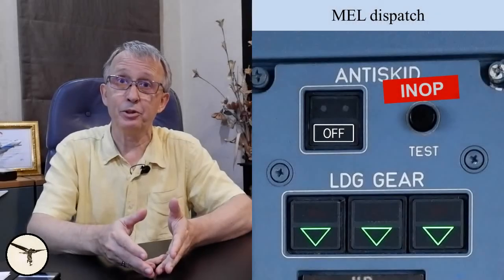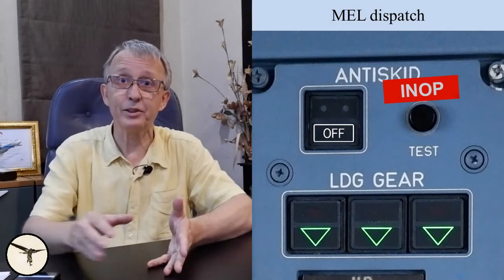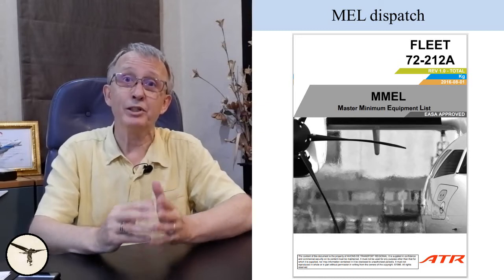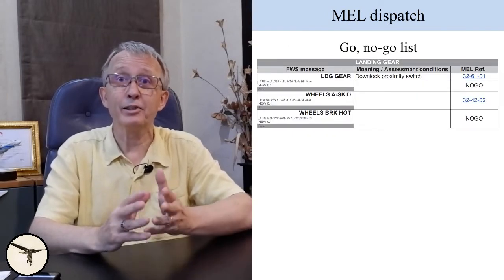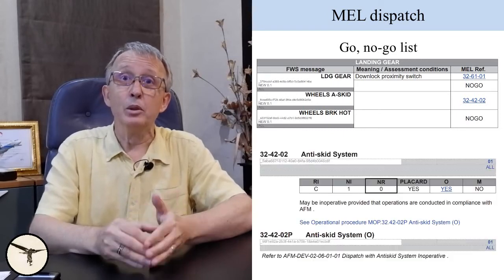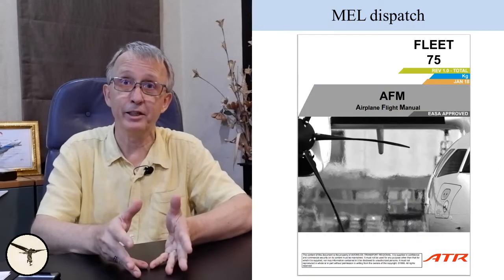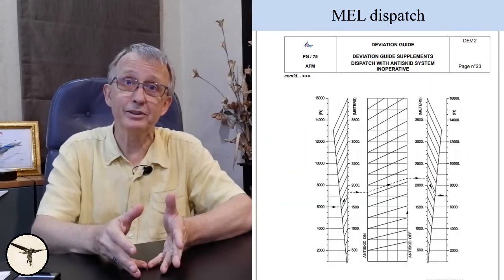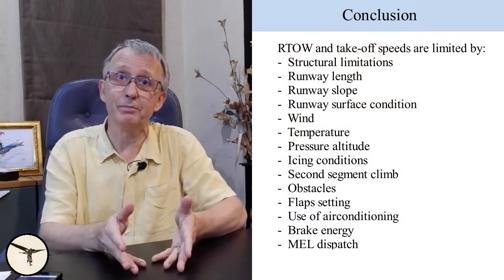We are allowed to depart with an inoperative system under certain conditions. For example, if the anti-skid system is inoperative, we need more stopping distance. The first manual to consult is the Minimum Equipment List, MEL, which is the company version of the Master MEL. We start with the go/no-go list to see what we are allowed to fly with. We then proceed to the page for the relevant system, which says we must follow an operational procedure in the AFM — the Airplane Flight Manual. The relevant page shows the procedure and how much the accelerate stop distance is increased — in this case about 300 meters. Here are all the factors we must consider when calculating the regulatory takeoff weight and the takeoff speeds.